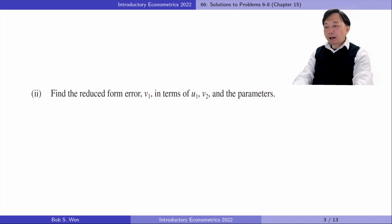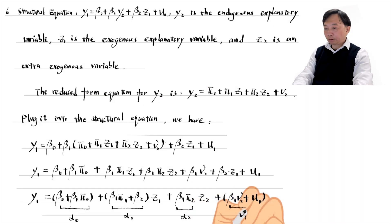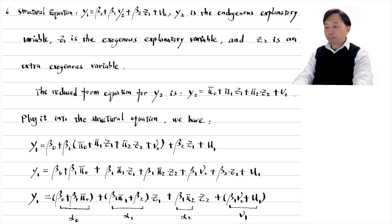In part 2, we find the reduced form error mu1 in terms of mu1 and mu2.